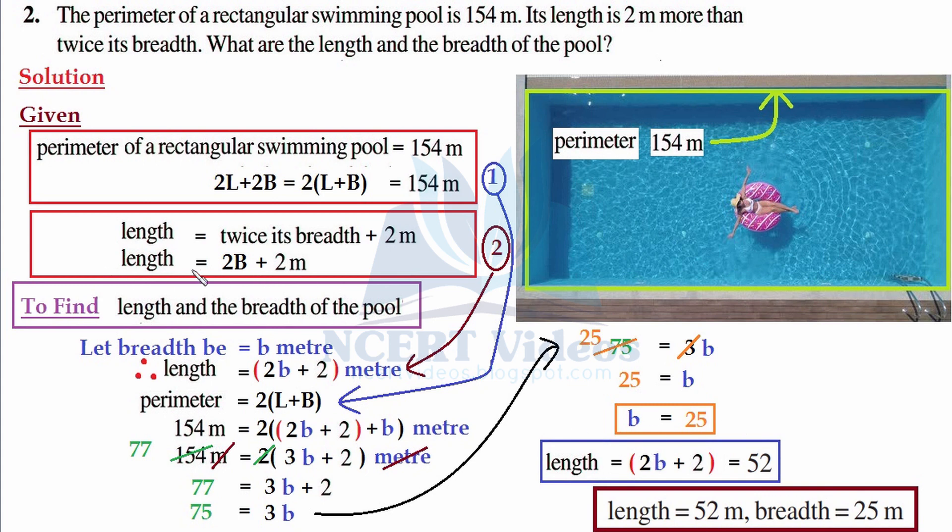So length was twice of breadth and add 2 meters to it. So twice of breadth means 25 into 2 is 50, and adding 2 extra to it gives you 52. So it simply means we have breadth as 25 meters and length as 52 meters.